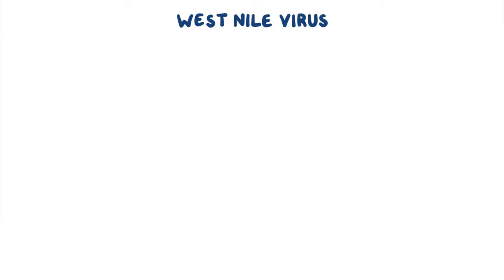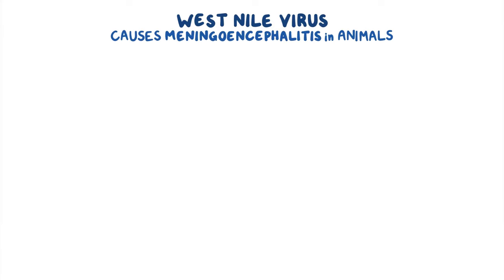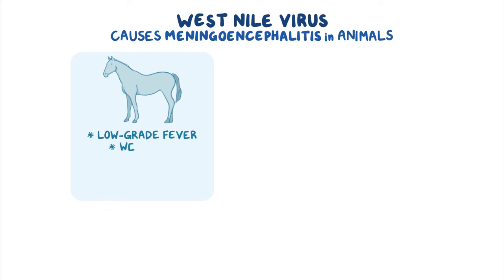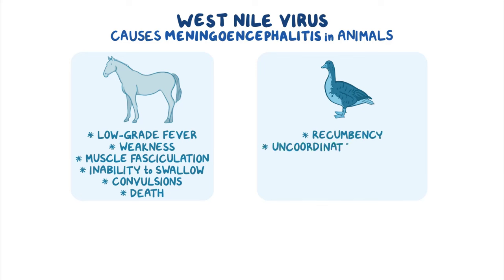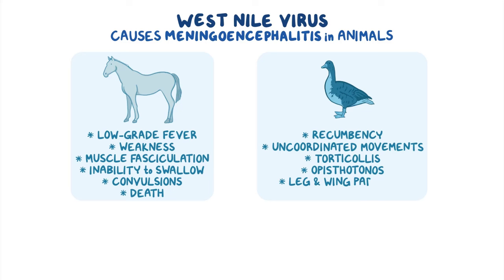West Nile virus usually causes meningoencephalitis in infected animals. Common symptoms in horses include low-grade fever, weakness, muscle fasciculation, inability to swallow, convulsions, and even death. Typical symptoms in birds include recumbency, uncoordinated movements, torticollis, apostatinis, and leg and wing paralysis.